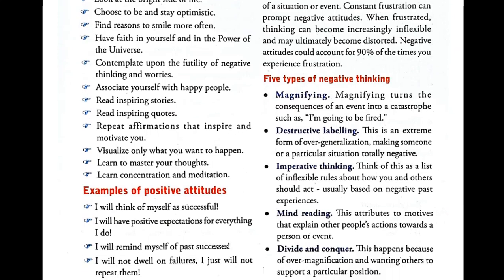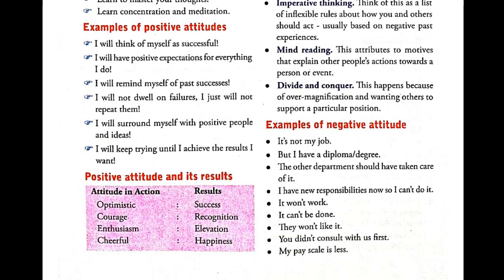Examples of positive attitudes: I will think of myself as successful. I will have positive expectations for everything I do. I will remind myself of past successes. I will not dwell on failures — I just will not repeat them. I will surround myself with positive people and ideas. I will keep trying until I achieve the results. You should read and understand these examples.